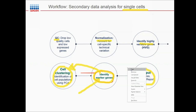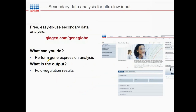For population-based secondary analysis, the GeneGlobe Data Analysis Center outputs fold-regulation results. You specify control and experimental samples, group replicates, and select which comparisons to run. The center runs multiple normalization methods and outputs results, and you select those that best align with your experimental goals. The analysis center is set up to run thousands of samples at one time.